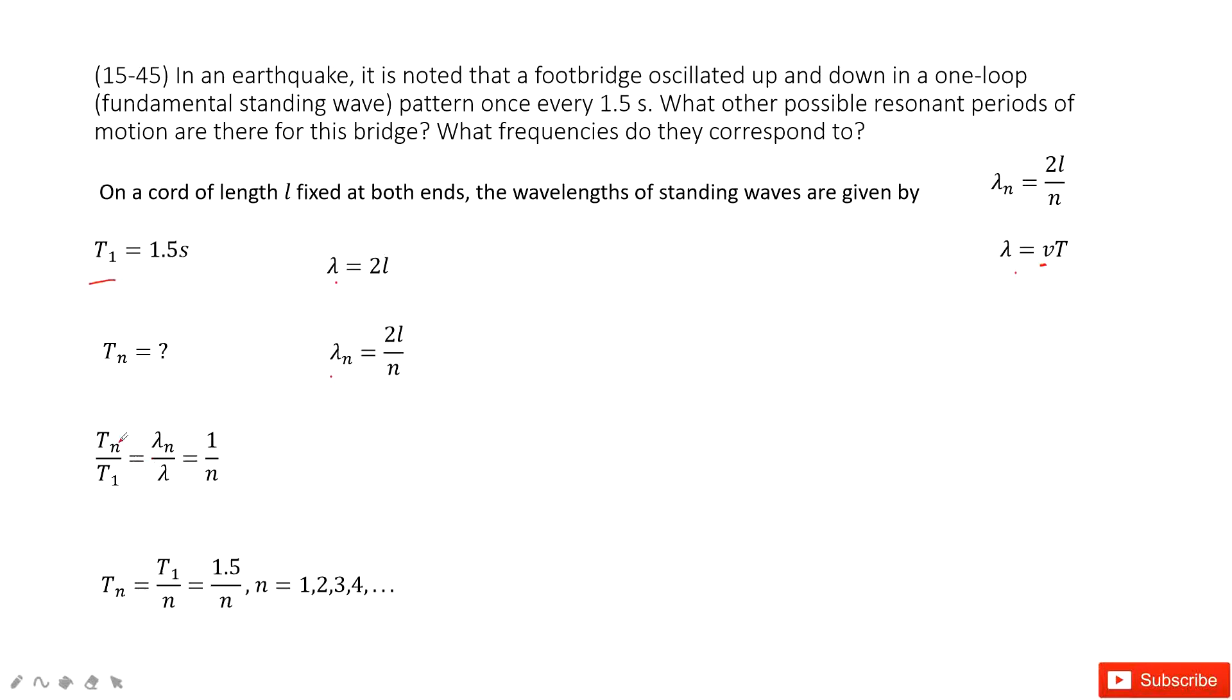So we can get the ratio. T_n over T_1 just equals lambda n over lambda 1 because lambda is proportional to t. And then this equals 1 over n from these two equations. So we can write the equation t_n equals t_1 over n.